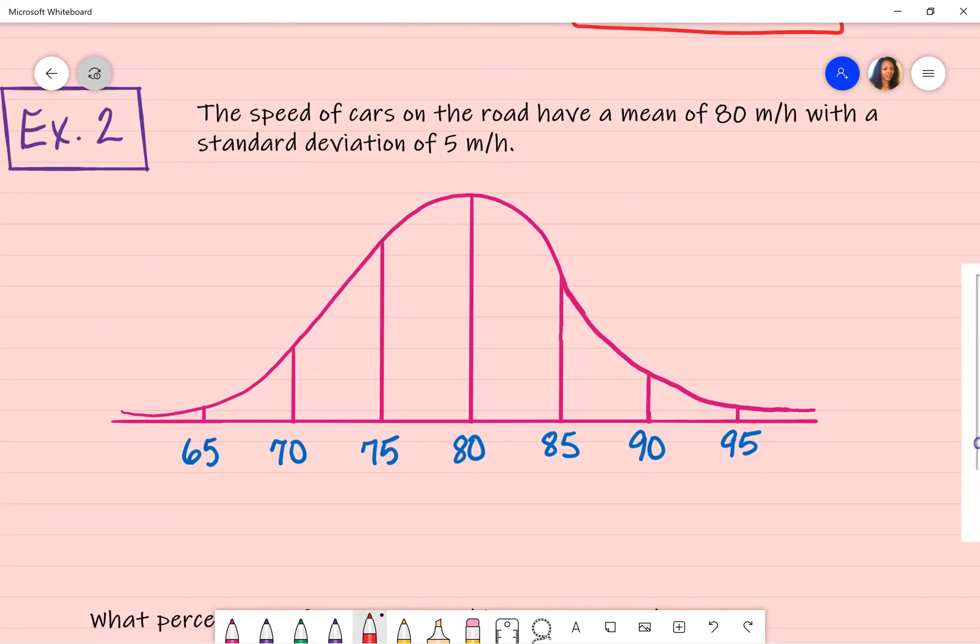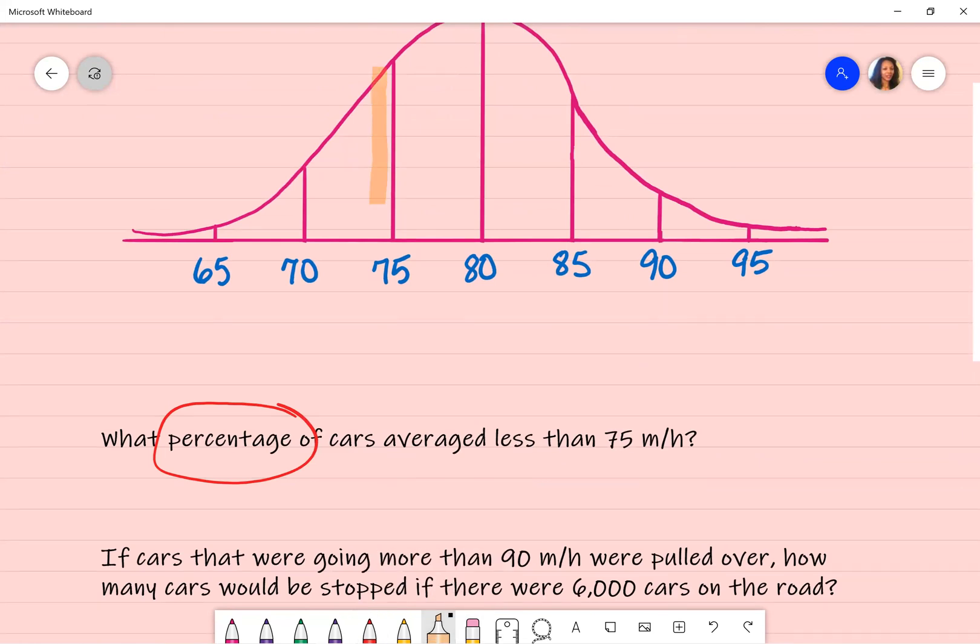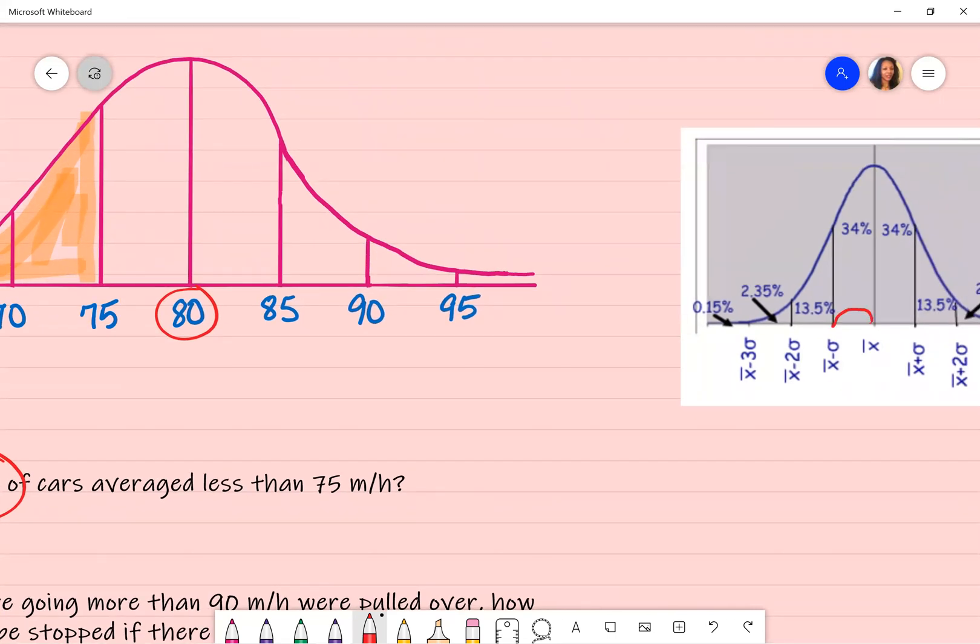On example two, the speed of cars on the road have a mean of 80 with a standard deviation of five. Your mean goes in the middle. You count to the right by fives. You count to the left going down by five because that's what your standard deviation is. Once you have that information set up, now you can answer your questions. What percentage of cars average less than 75 miles per hour? So 75. And this time we're going to the left. So I went ahead and brought down the visual representation so that you can quickly see it. My mean is here. If I go over one standard deviation, which I am doing, then it is going to start counting one standard deviation, this part. So we just added this on the other side, 13.5 plus this 2.5. Once you add it together, it's still 16.